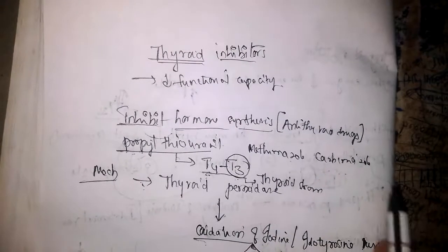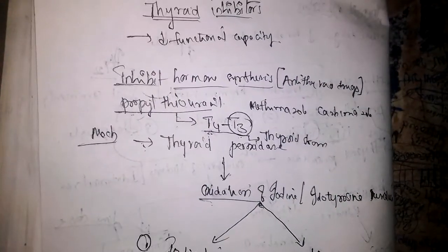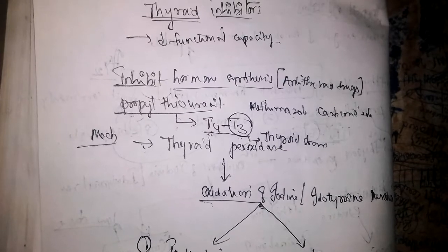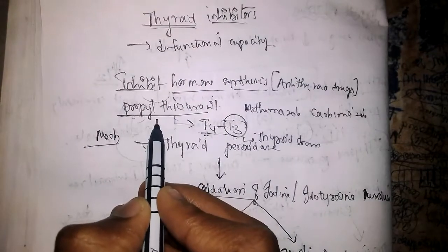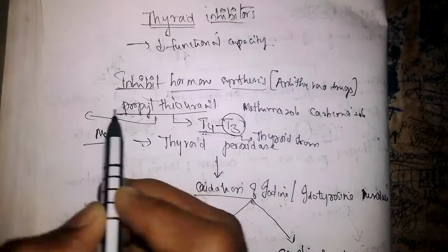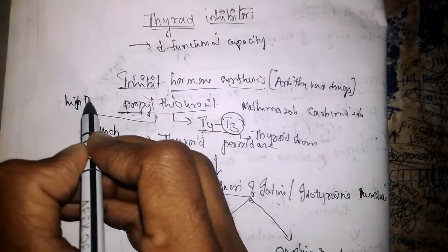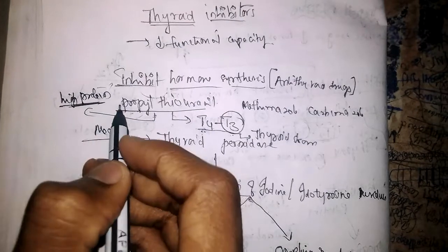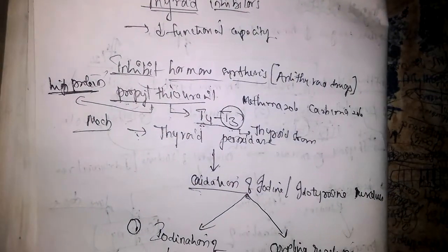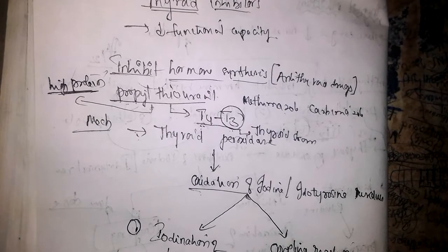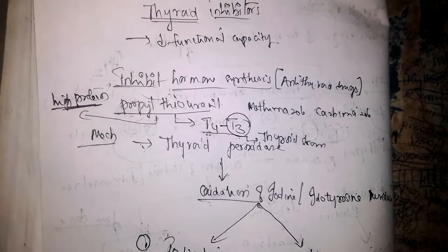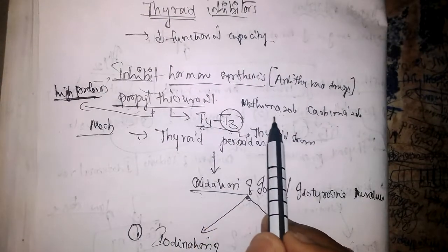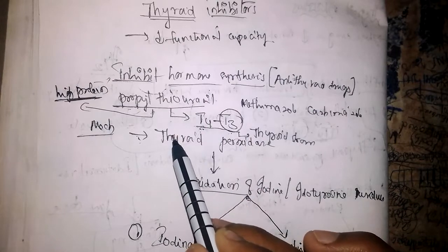All these drugs — propylthiouracil, methimazole, and carbimazole — have teratogenicity. If they are given during pregnancy, they cause hypothyroidism in the fetus. Propylthiouracil has high protein binding. Due to this high protein binding, the relative presentation of propylthiouracil to the fetus will be lowered compared to other drugs.